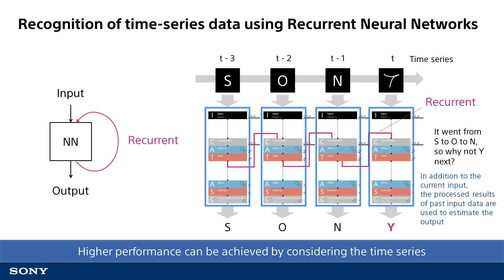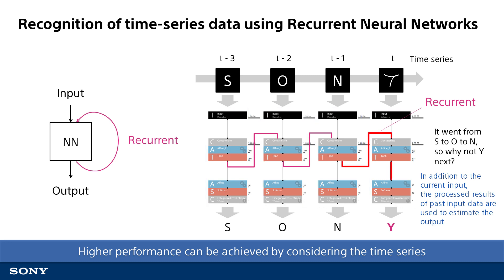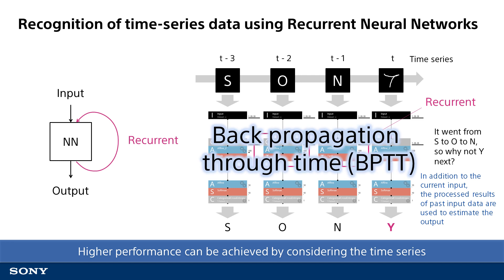As discussed in the mechanism of neural network training video, we use the backpropagation technique to calculate a gradient that is used to optimize parameters. Backpropagation is used in RNNs to go back in time series order. As such, backpropagation is referred to as backpropagation through time when used in reference to RNNs.